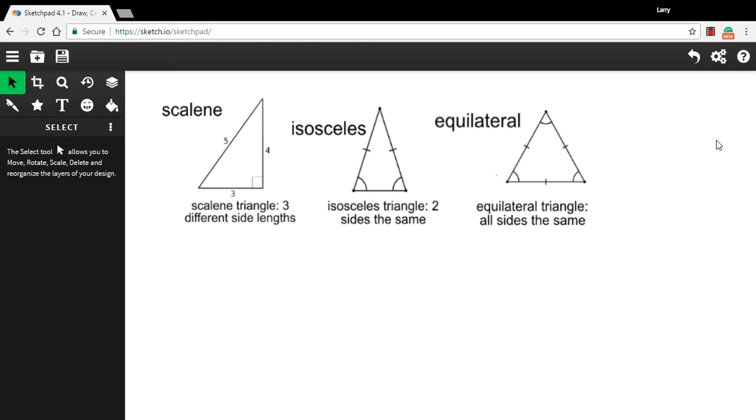Today, we are classifying triangles by their side lengths. There are other ways to classify triangles. You could classify them by their angles, for example. But today, we're looking at side lengths, and there are really only three possibilities here.